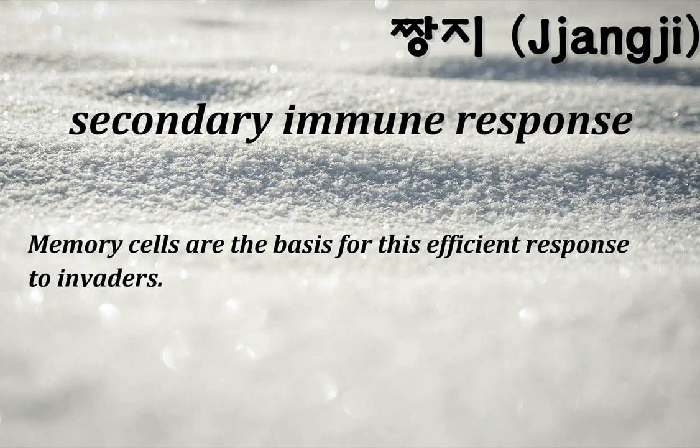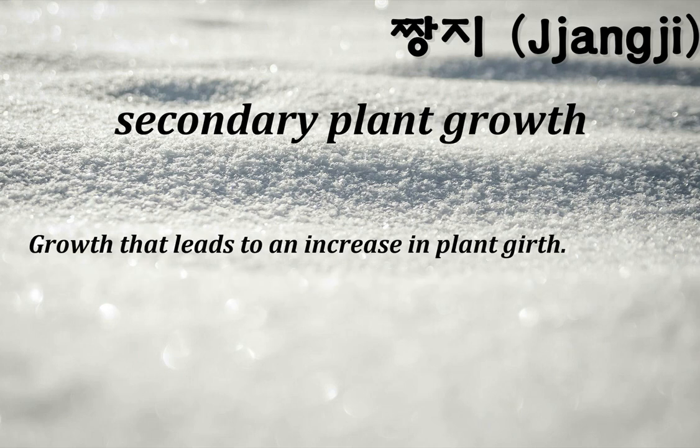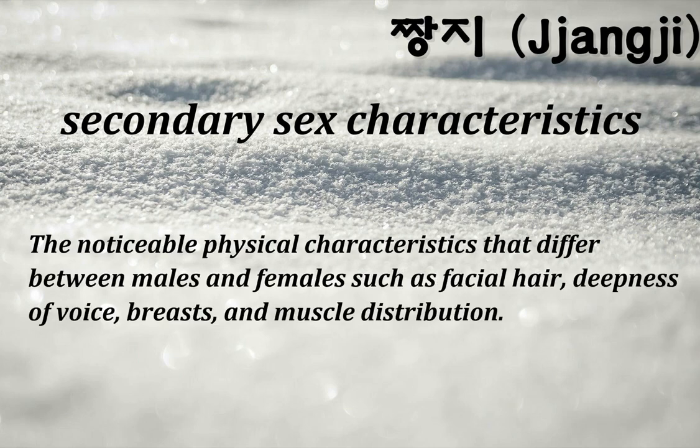Secondary immune response: memory cells are the basis for this efficient response to invaders. Secondary oocyte: an oocyte that has half the genetic information of the parent cell but the majority of its cytoplasm. Secondary plant growth: growth that leads to an increase in plant girth. Secondary sex characteristics: the noticeable physical characteristics that differ between males and females such as facial hair, deepness of voice, breasts, and muscle distribution.